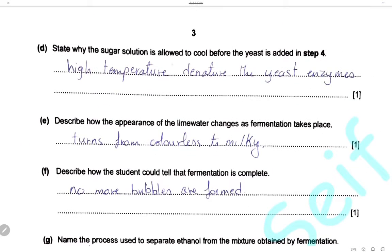State why the sugar solution is allowed to cool before yeast is added in step 4. High temperature will denature the yeast enzyme, so we have to leave it to cool first. The optimum temperature for the yeast enzyme is about 37°C, but high temperature will denature the yeast enzyme.